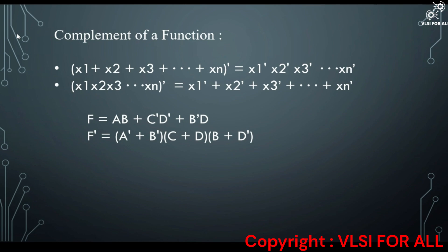Our next concept is the complement of a function. It contains two rules: First, (x₁ plus x₂ plus x₃ … xₙ)̄ = x̄₁ · x̄₂ · x̄₃ … x̄ₙ. Second, (x₁ · x₂ · x₃ … xₙ)̄ = x̄₁ plus x̄₂ plus x̄₃ … x̄ₙ. For example, if the function is AB plus C̄D̄ plus B̄D, to find its complement we change the plus operator to dot, variables without complement get complemented, and variables already complemented lose their complement. This is the complement of a function.